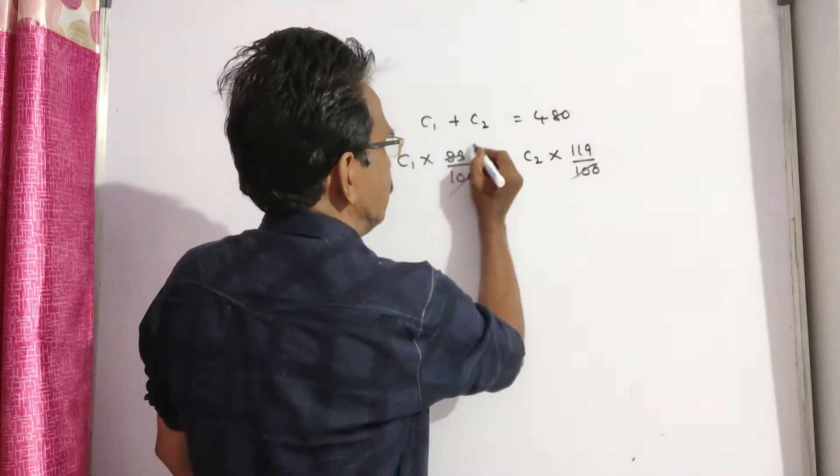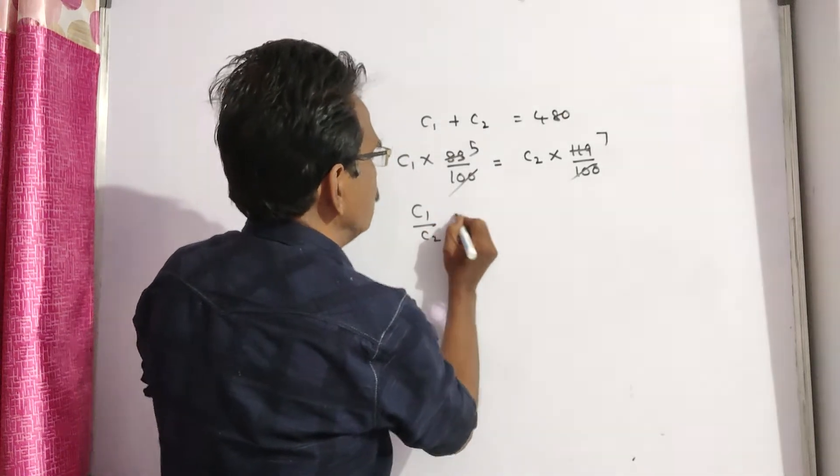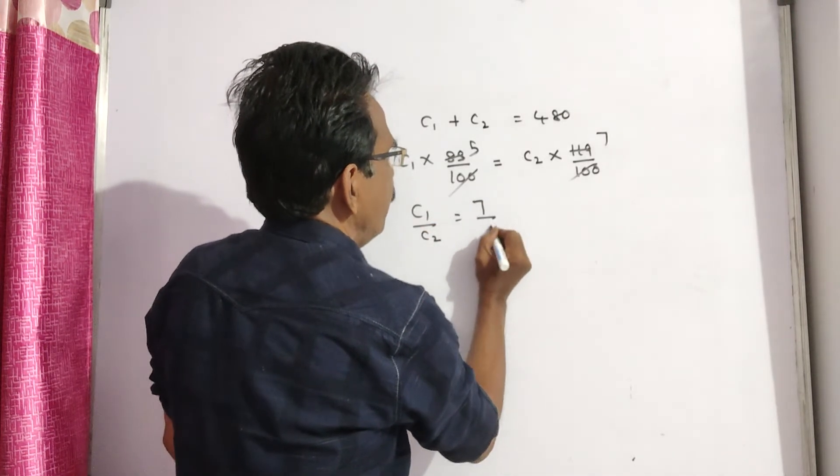Now let us find the ratio. C1 by C2 is equal to 7 by 5.